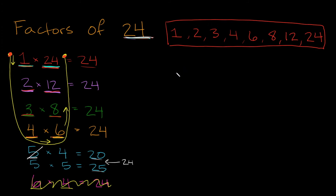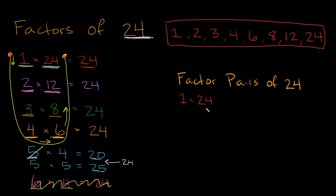What are the factor pairs of 24? They are simply the two numbers we multiplied together to get 24: 1 times 24, 2 times 12, 3 times 8, and 4 times 6. So we have four different factor pairs of 24.